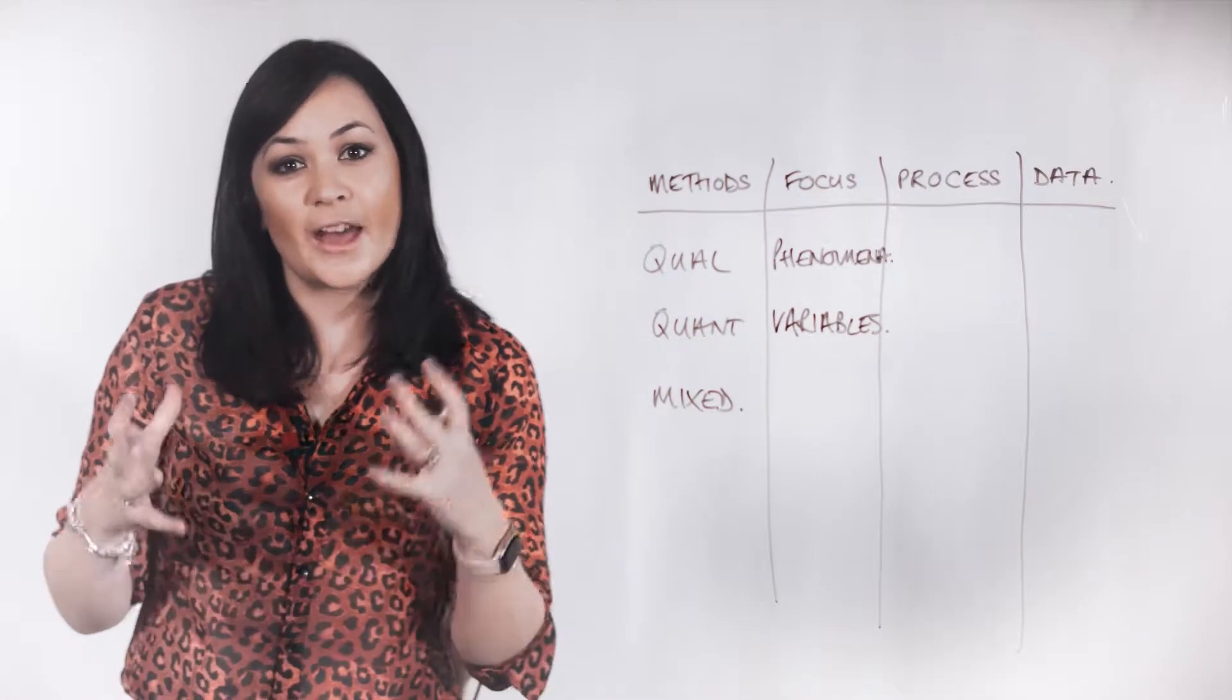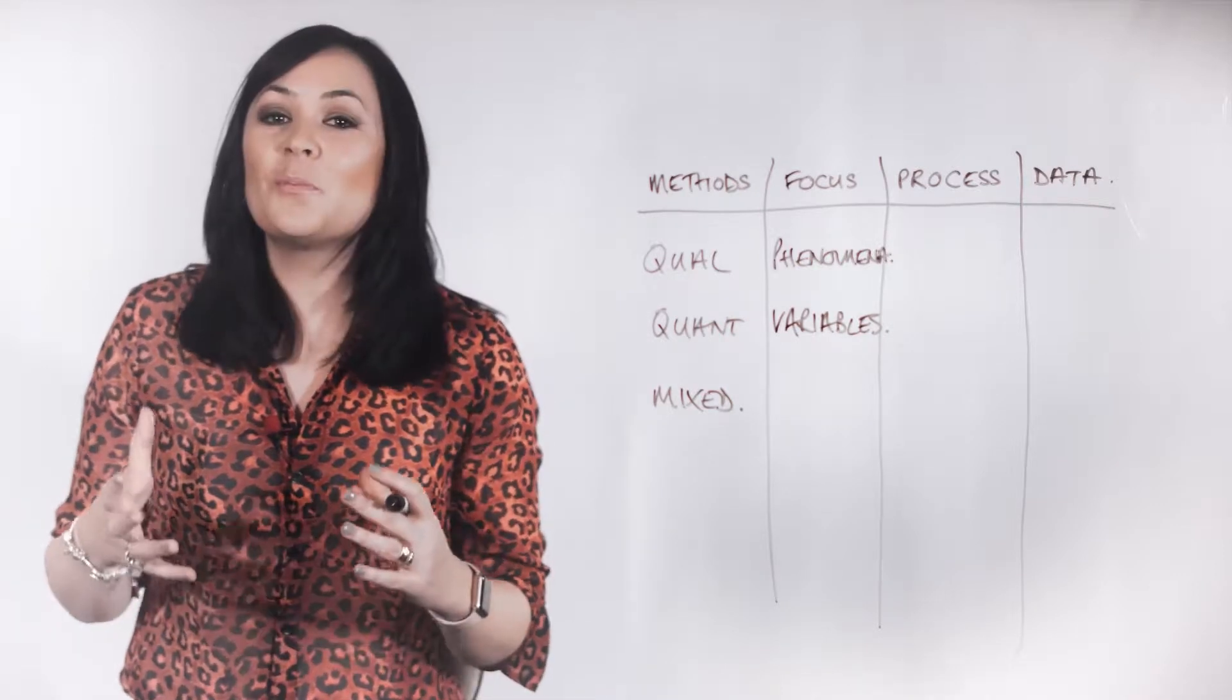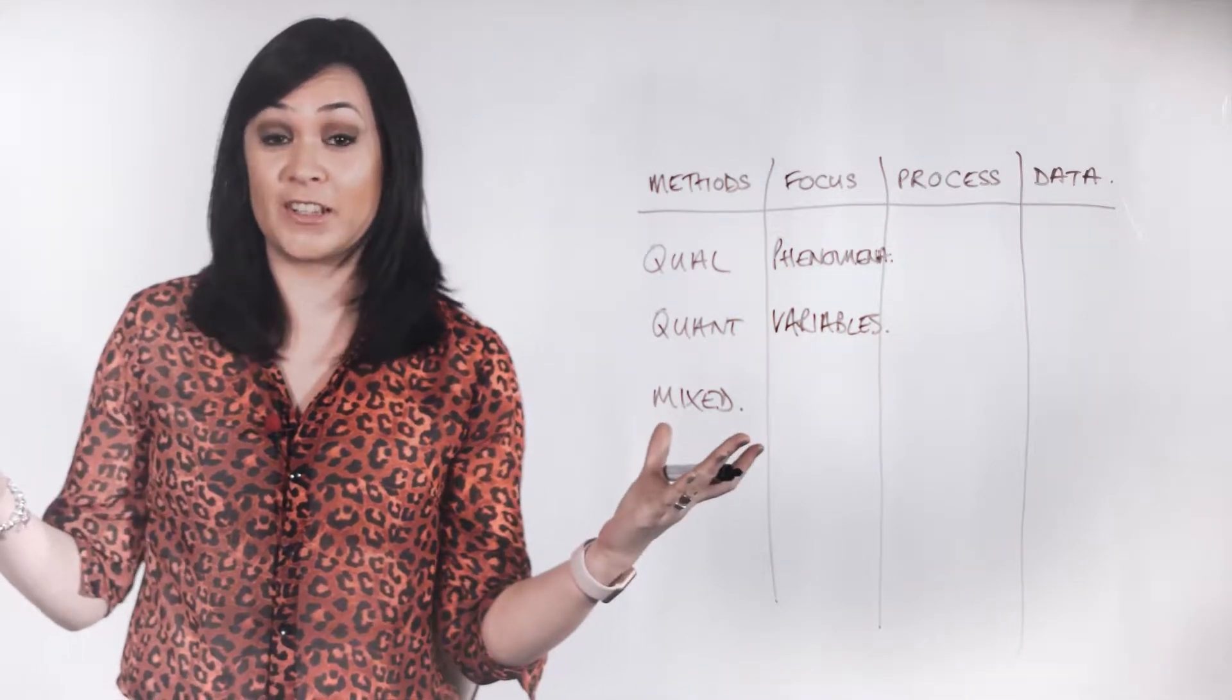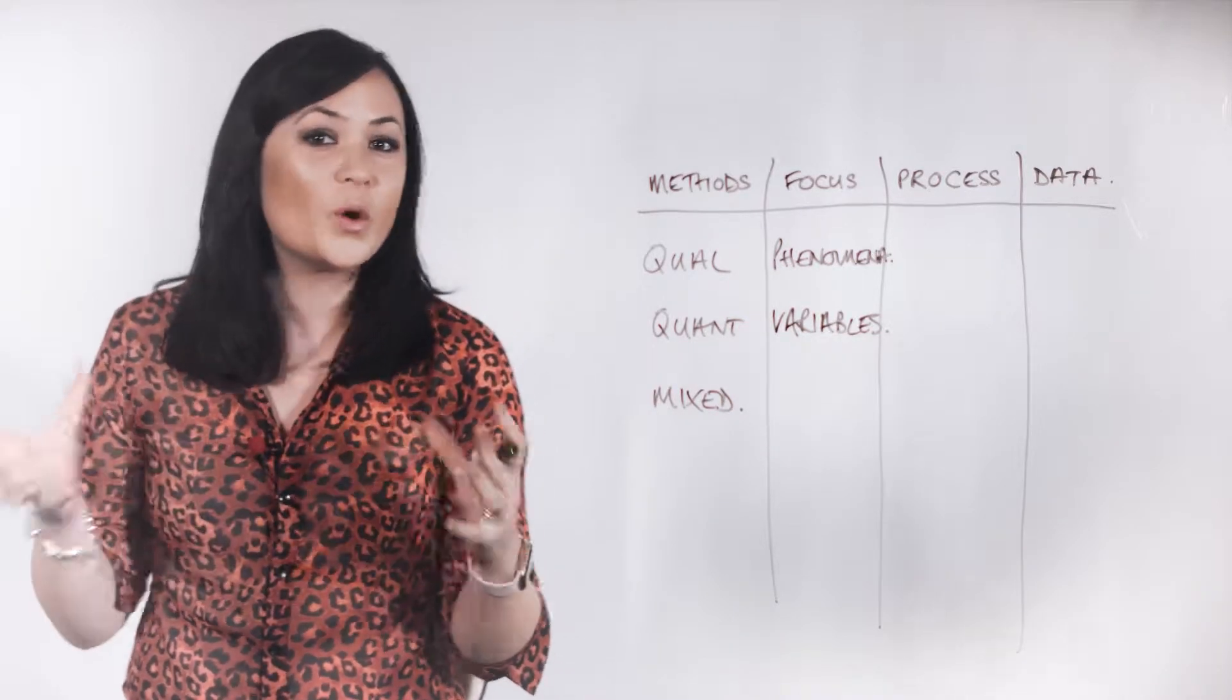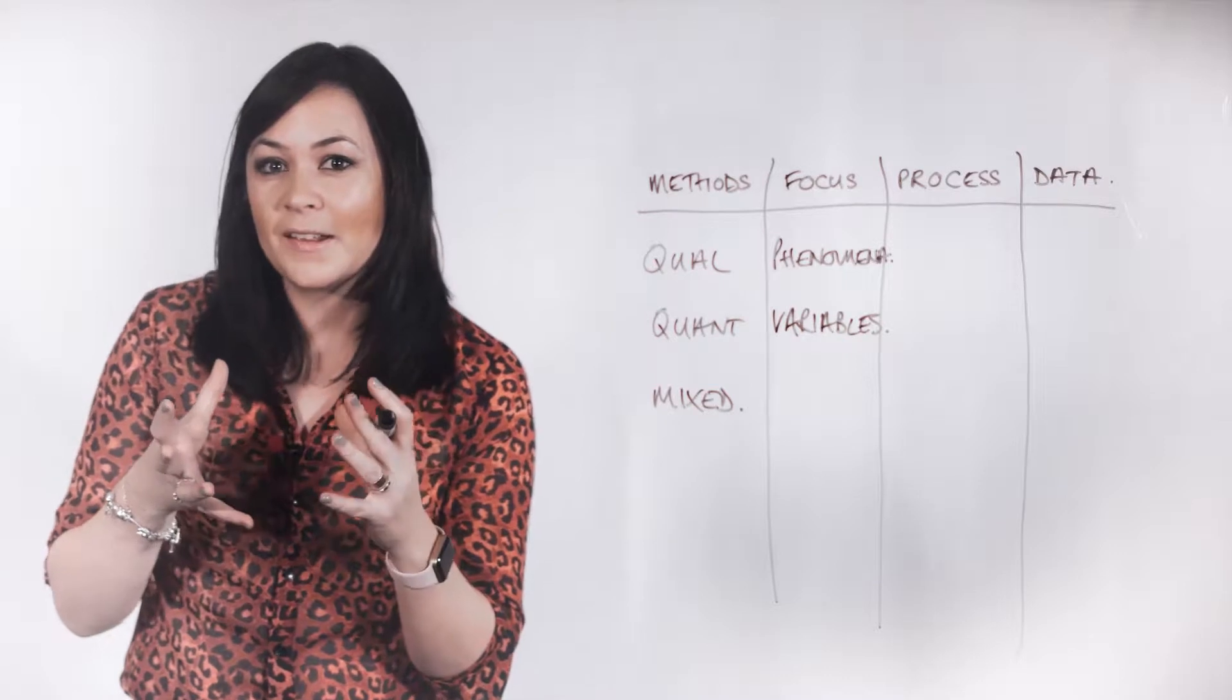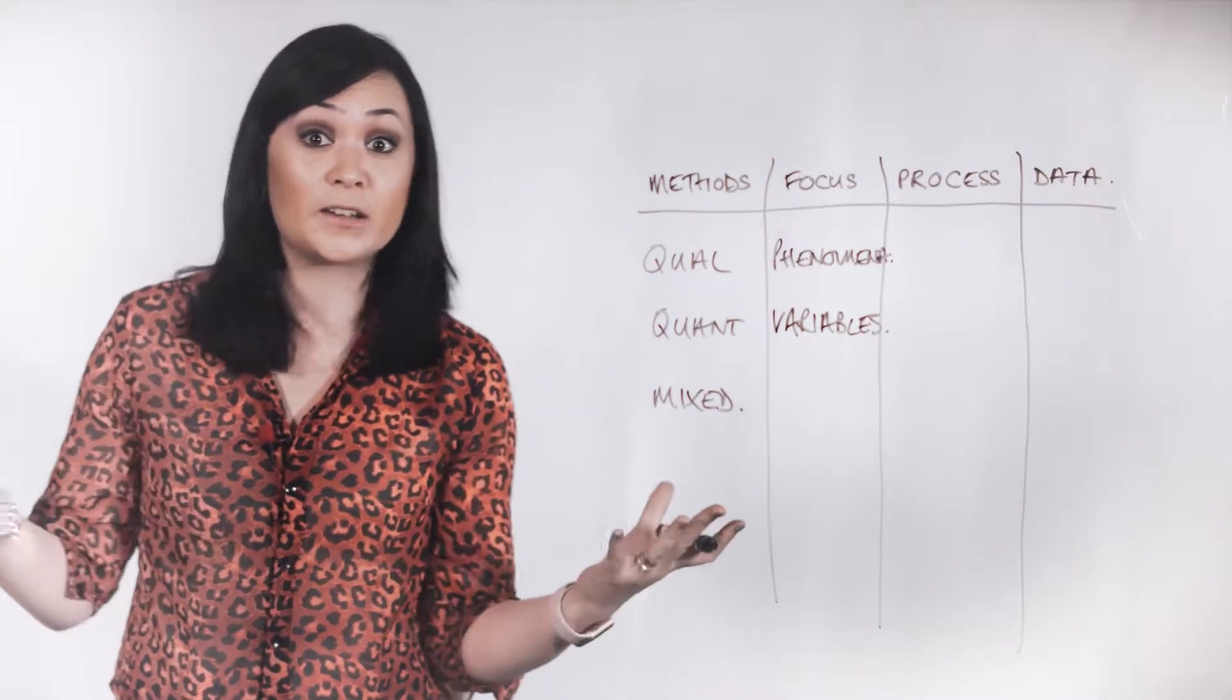Because qualitative and quantitative studies are focused differently, they also proceed differently. They engage in analysis in opposite directions, actually. So let's stick to our quantitative examples for just a moment. Because they start with a sense of those clearly defined variables, they're usually deductive in nature.